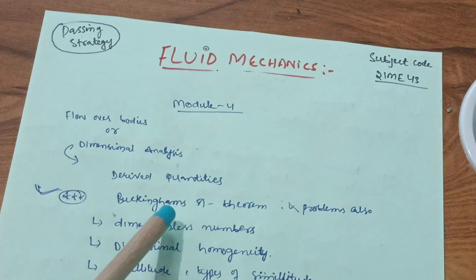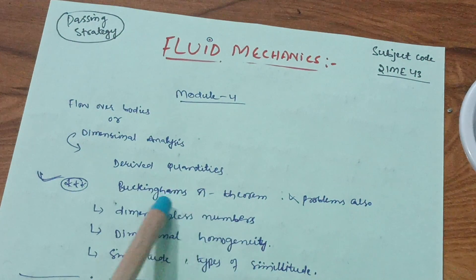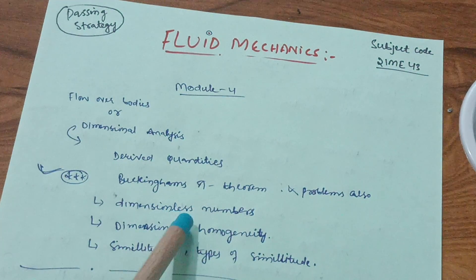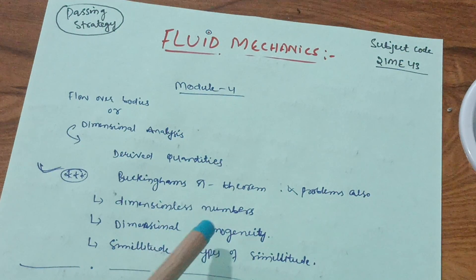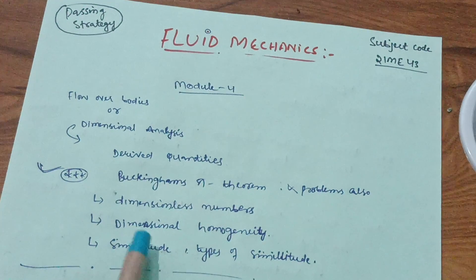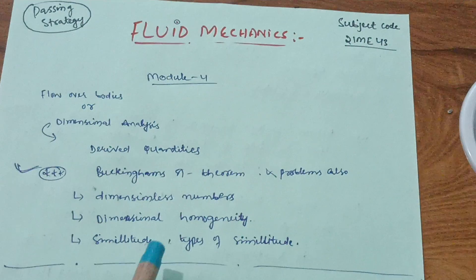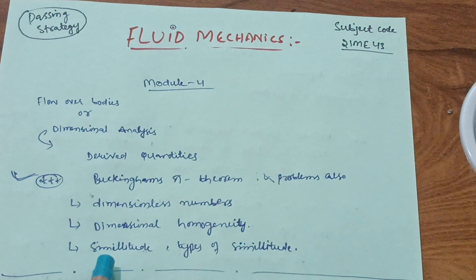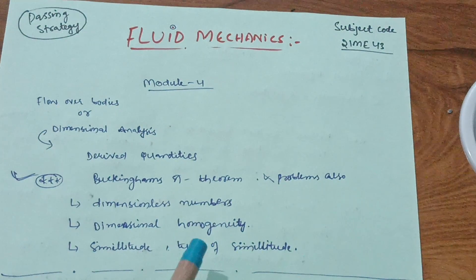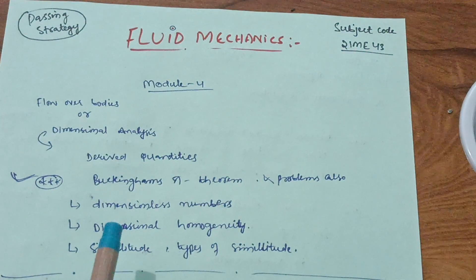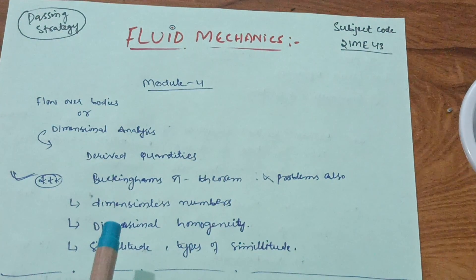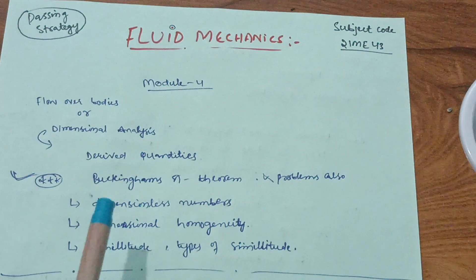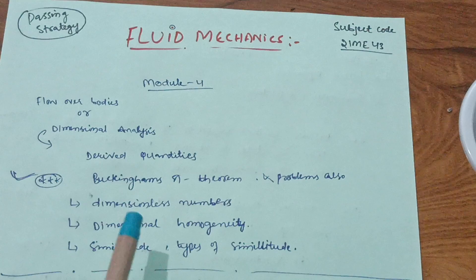Buckingham's Pi theorem is a definite question — you have to derive it and also try some problems. You also need to cover dimensionless numbers, dimensional homogeneity, and the law of dimensional homogeneity. Next, cover similitude and types of similitude. Focus on this second chapter — dimensional analysis — as it is a very easy part. They will give a 10-mark question on Buckingham's Pi theorem plus a problem.